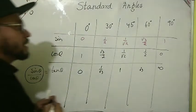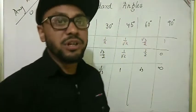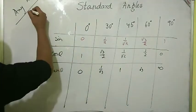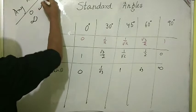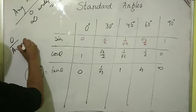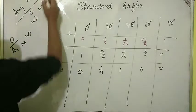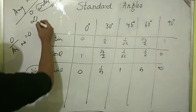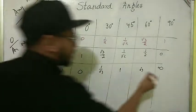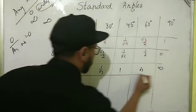For tan 90°, we get 1 divided by 0, which is undefined in mathematics. Any number divided by 0 does not exist in real math — it is called undefined, not infinity. Don't confuse this with the infinity symbol. So tan 90° = undefined. Note: 0 divided by any number is 0, which is acceptable, but any number divided by 0 is unacceptable.